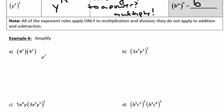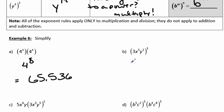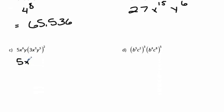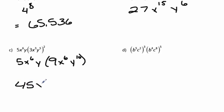In example 6 part A, 4 to the 3rd times 4 to the 5th gives you 4 to the 8th, which simplifies to 65,536. In part B, 3x to the 5th y squared to the 3rd gives you 3 to the 3rd which is 27, times x to the 5th to the 3rd which is x to the 15th, and y squared to the 3rd which is y to the 6th. In part C, 5x to the 6th y times the quantity 3x cubed y to the 5th squared simplifies that quantity first to 9x to the 6th y to the 10th, giving us 45x to the 12th y to the 11th.